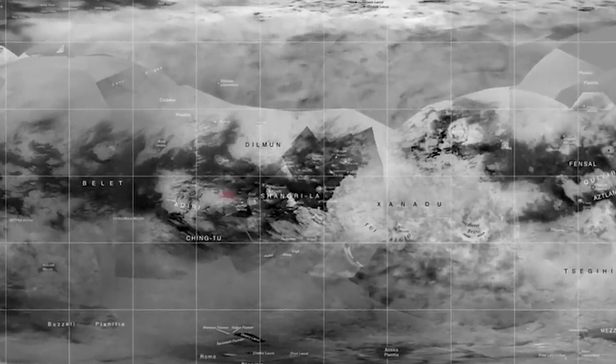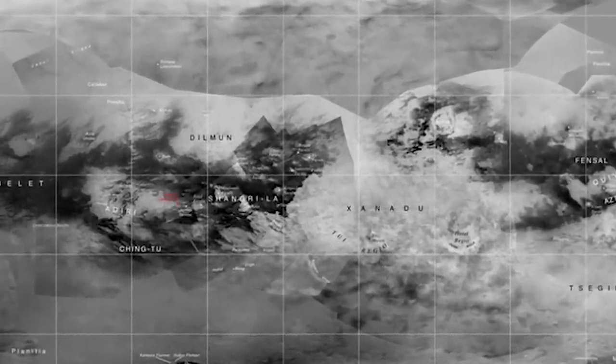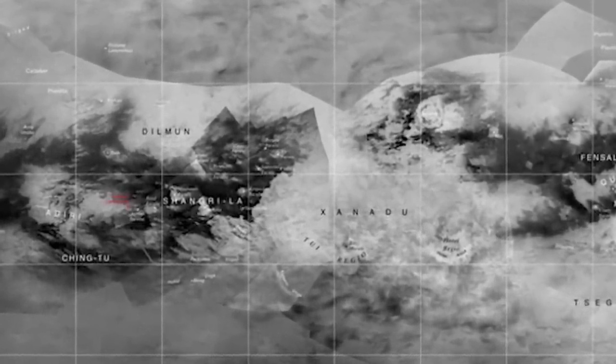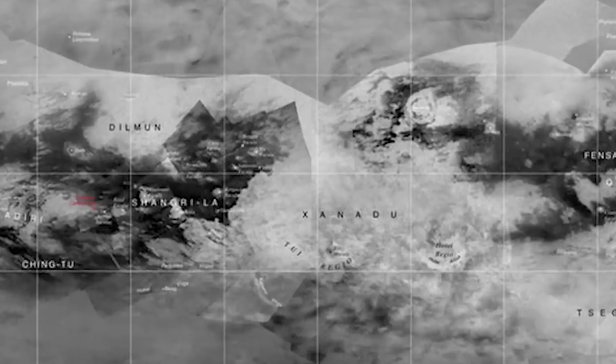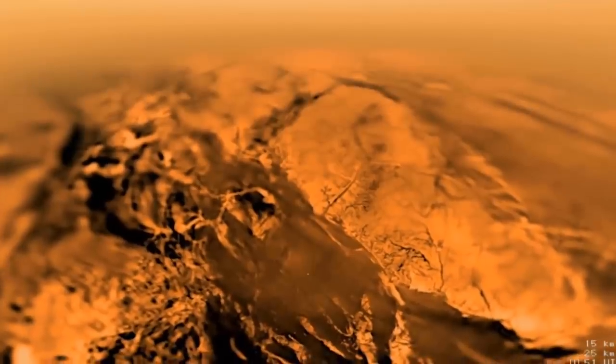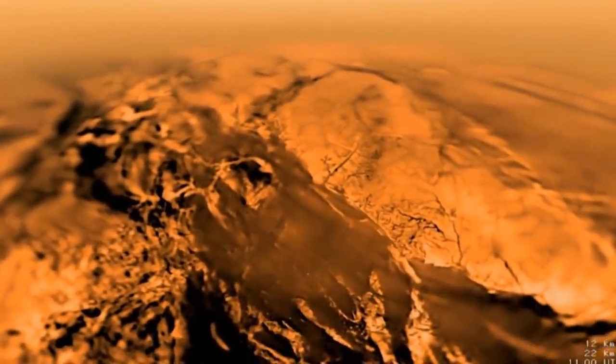An area of the surface known as the Xanadu region is a large, reflective equatorial area about the size of Australia. It's filled with hills and cut by valleys and chasms.